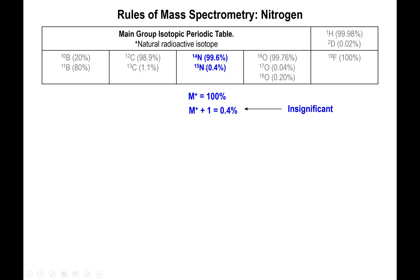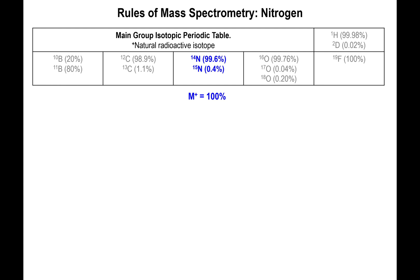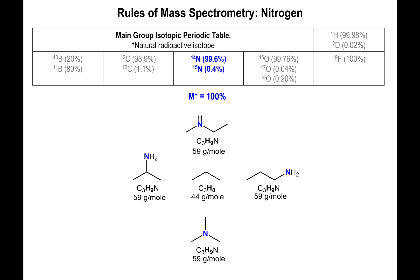Now let's look at nitrogen. This is an interesting element. There are two isotopes, but nitrogen-15 is so small it's regarded as insignificant and won't really show up in most mass spectra. But there is something interesting about nitrogen worth pointing out.